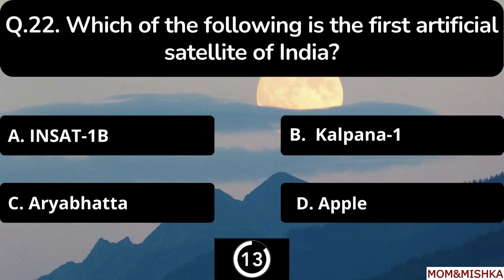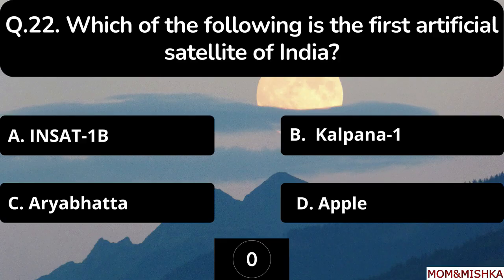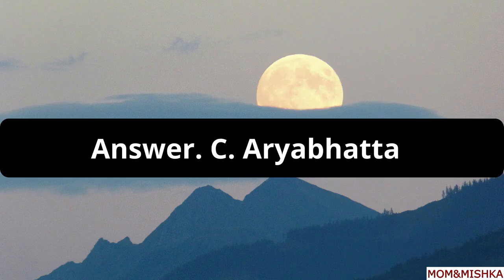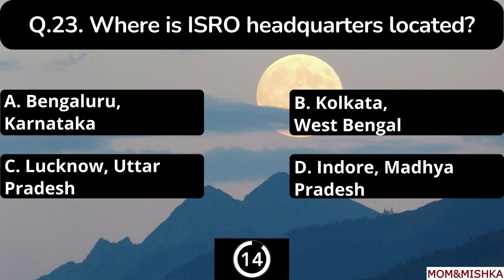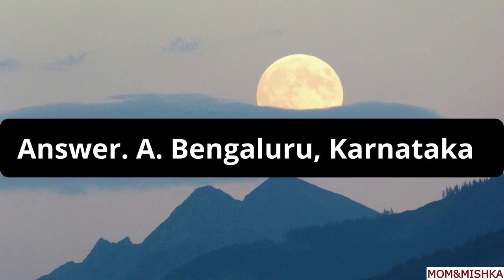Which of the following is the first artificial satellite of India? The correct answer is option C: Aryabhata. Where is ISRO headquarters located? It's in Bengaluru, Karnataka, option A.